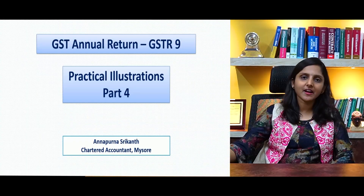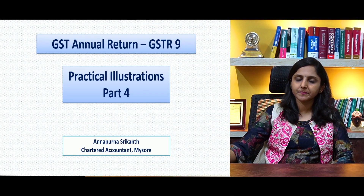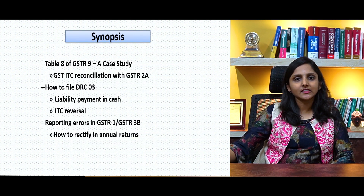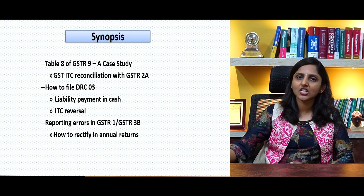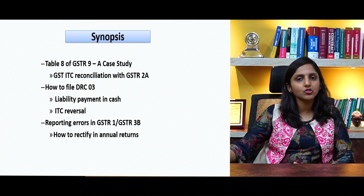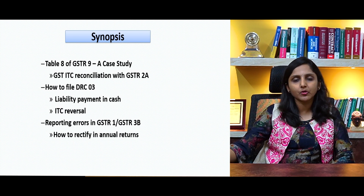Dear friends, welcome back to this series on practical illustrations on GST annual returns. This is part 4. In this part, we will be covering three major aspects. One is the outcome of reconciliation of my input tax credits — that is my GSTR-3B versus books versus my GSTR-2A — and how to report it in table 8 of annual returns.